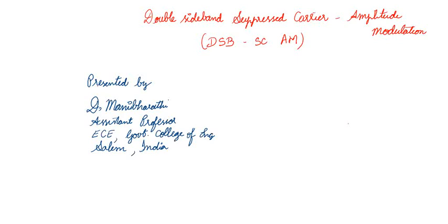Hi and hello to everyone. In this video we are going to discuss about the Double Sideband Suppressed Carrier type amplitude modulation, also called DSB-SC, where DSB is Double Sideband and SC stands for Suppressed Carrier. AM is the amplitude modulation. Welcome to the lecture.